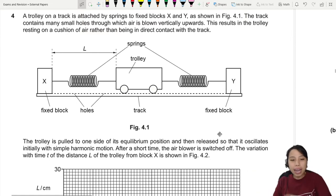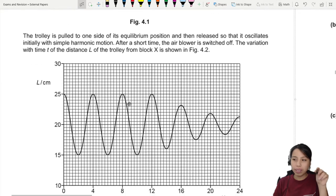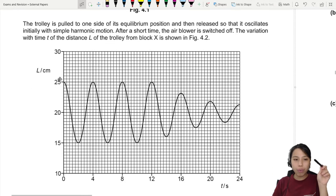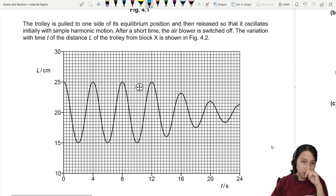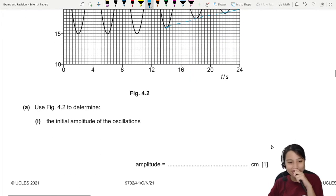The variation with time t of distance L is shown as below. So we have this nice simple harmonic motion graph where you do an oscillation, oscillation, oscillation, then something happens. Your amplitude gets smaller and smaller and smaller. We have seen this graph before.